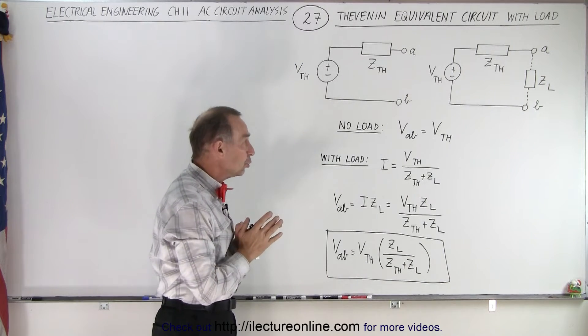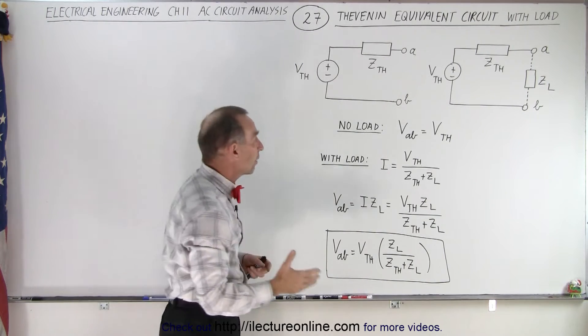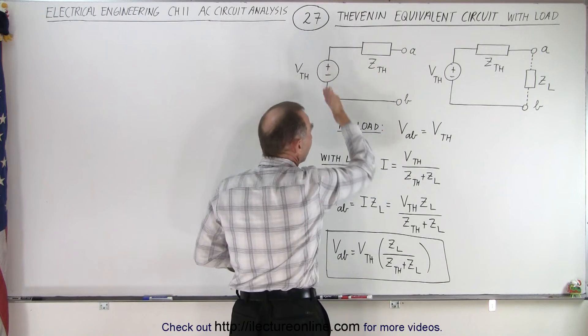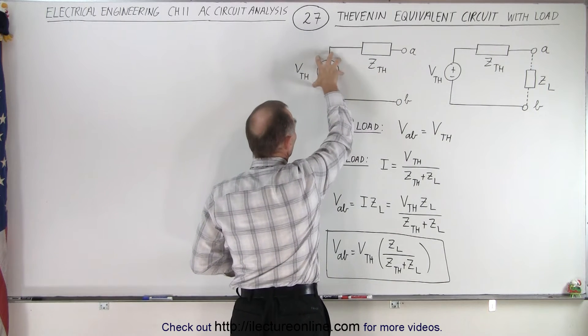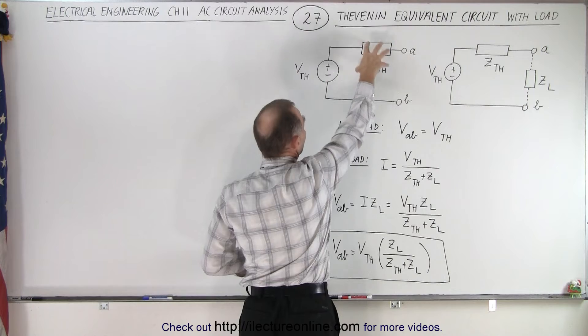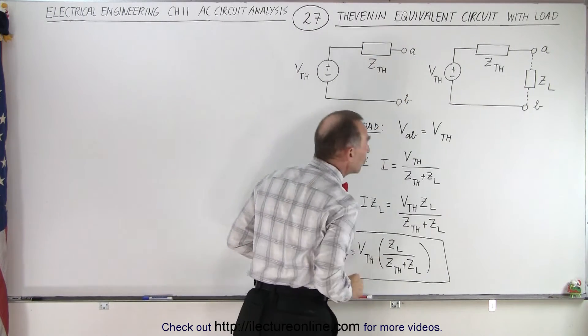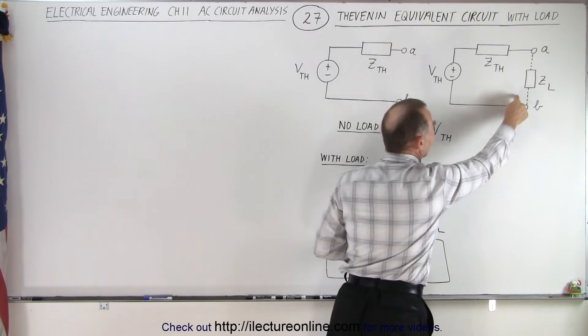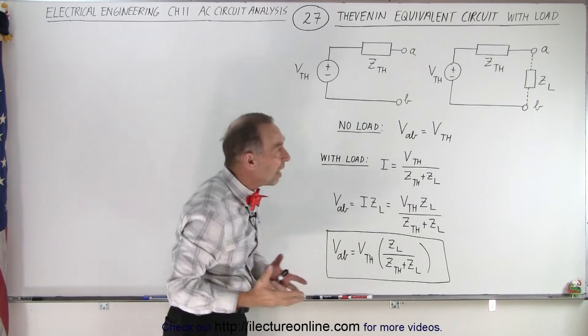But if there is a load, then you need to take that into account. So you first get the equivalent Thevenin circuit, find the Thevenin voltage, find the Thevenin impedance when you remove the load, and then you attach the load. So what happens now?